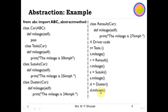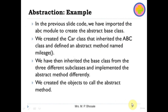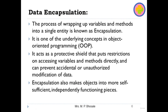In the example, Car is the abstract class because it inherits ABC, and def mileage is the abstract method with only a pass keyword — meaning no implementation is written there. The implementation is in the subclasses Tesla, Suzuki, and Duster, which all implement the mileage abstract method. When we create objects of particular subclasses, we can call the method and get the output.